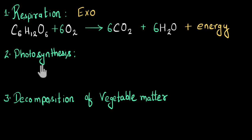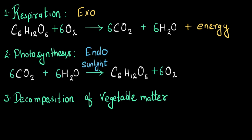Now let's talk about photosynthesis. Plants use this process to make food for almost the entire living world. They use carbon dioxide, water, and the energy from sunlight to make glucose. Since energy is being used, this is called an endothermic process. In the chemical reaction, sunlight energy is being used to make glucose from carbon dioxide and water — that's why this is endothermic in nature.